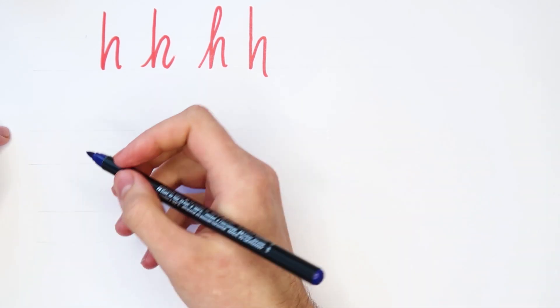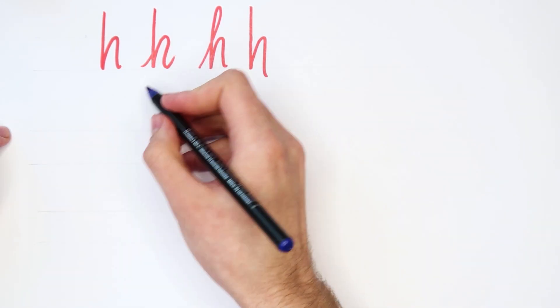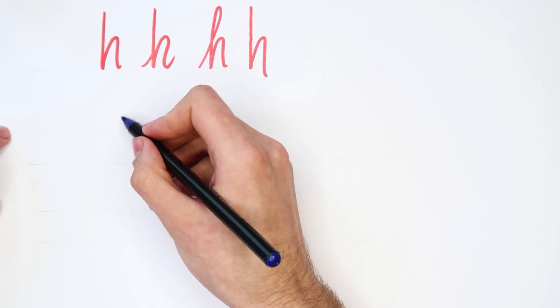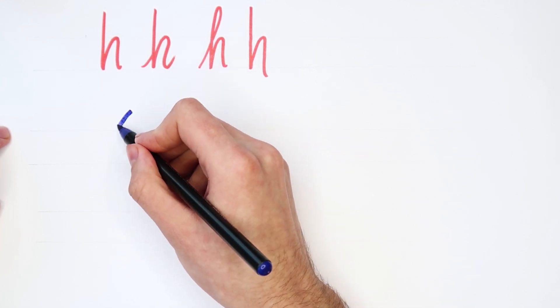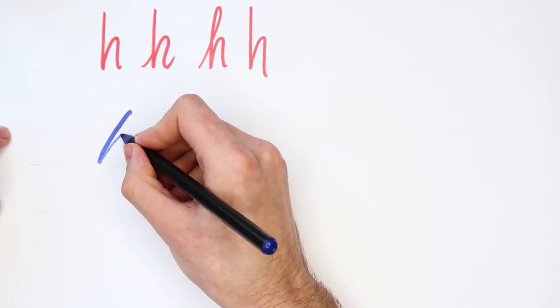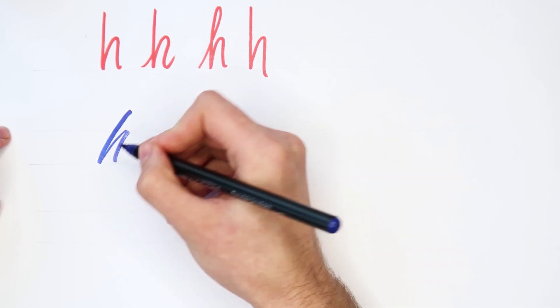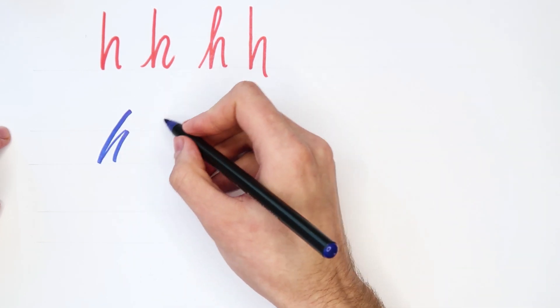Okay now let's try it with a brush pen. So it will be something like this, stroke down, stroke up, stroke down, most basic letter H.